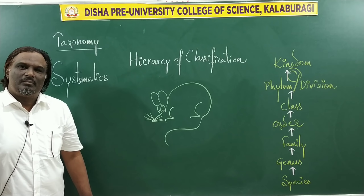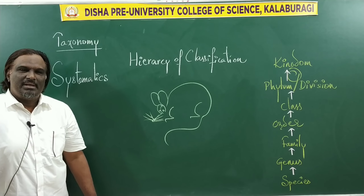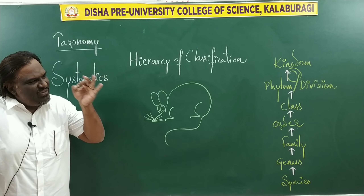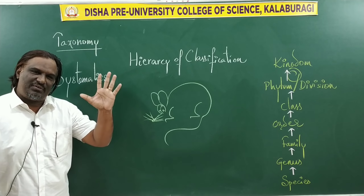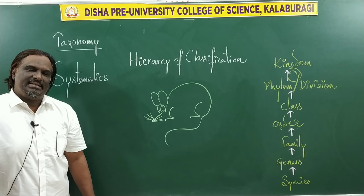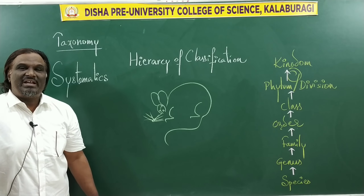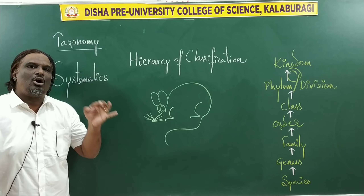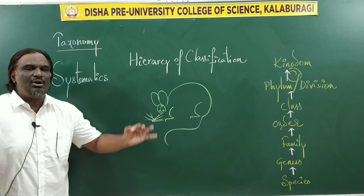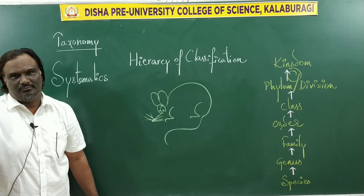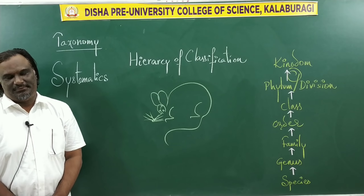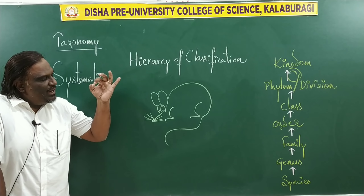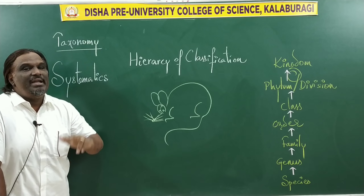His first contribution was giving us a method of scientific naming of organisms using two words — the generic name and specific epithet. This method of naming of organisms, proposed by Carolus Linnaeus, we call binomial nomenclature. Five universal rules for binomial nomenclature were explained in the previous class.